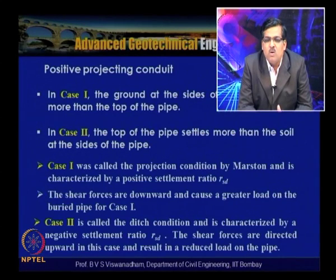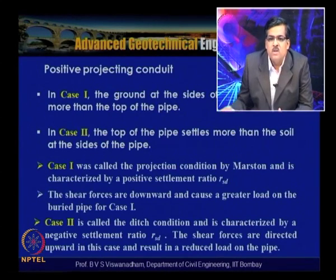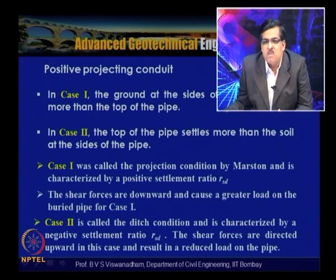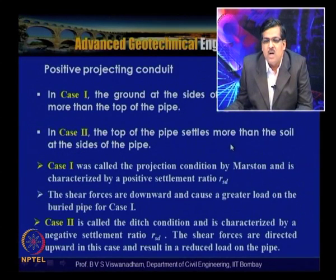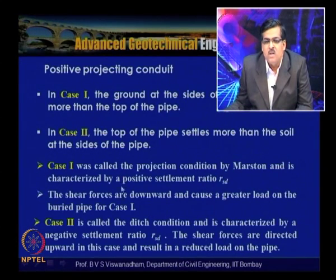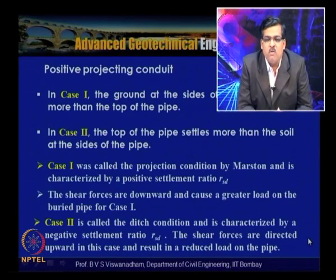In Case 1, shear forces are directed downward, causing a greater load on the buried pipe. Case 2 is called the ditch condition, characterized by a negative settlement ratio (Rst < 0) — here the top of the pipe settles more than the soil at the sides. Shear forces are directed upward, resulting in a reduced load on the pipe.